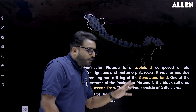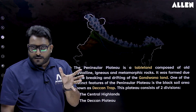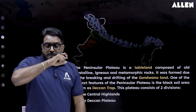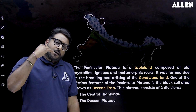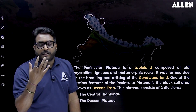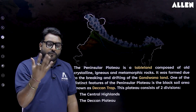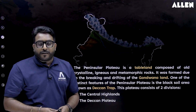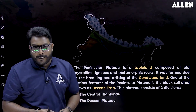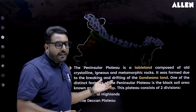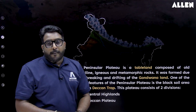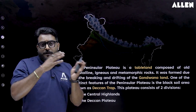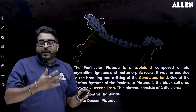The plateau is divided into two broad divisions: the Central Highland and the Deccan Plateau. The Narmada River is the dividing feature. North of the Narmada we find the Central Highland, covering the Malwa Plateau, with its eastward extension identified as Bundelkhand and Baghelkhand. South of the Narmada is the Deccan Plateau, a triangular landmass, with its northeast extension visible through the Meghalaya, Karbi Anglong Plateau, and North Cachar Hills.